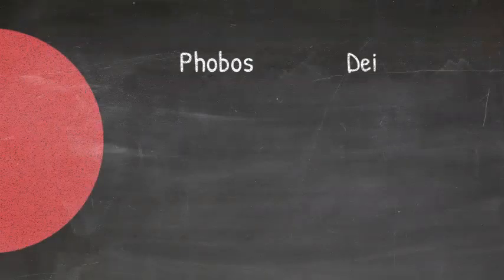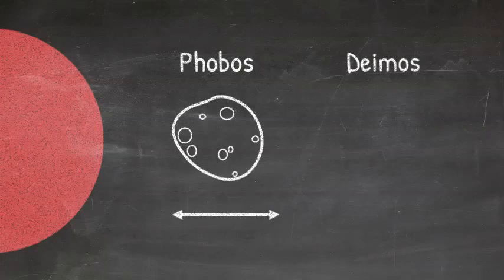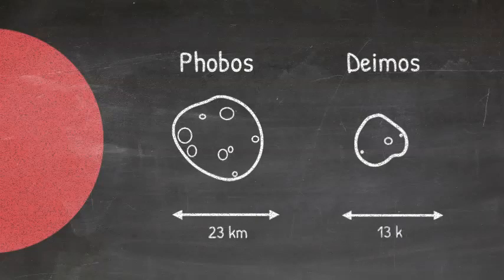Mars is orbited by two moons, Phobos and Deimos. Phobos has a diameter of approximately 23 kilometers, while Deimos is just 13 kilometers across.